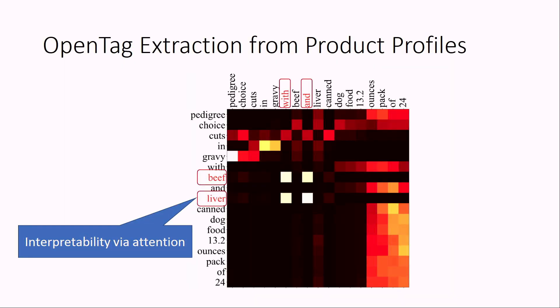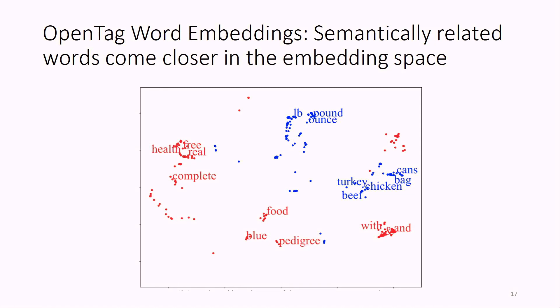A common complaint about neural networks is that they are dark magic and you cannot interpret what is going on inside. But using the attention mechanism, we can give certain kinds of interpretations. For example, the model is extracting beef and liver as flavor values when it is focusing more on conjunctions like 'with' and 'and', without us having to pre-program these rules. Using word embeddings, we can plot these words in a 2D plane and see that words of similar semantics come closer to each other — measurement units together, flavors and conjunctions together, and so on.